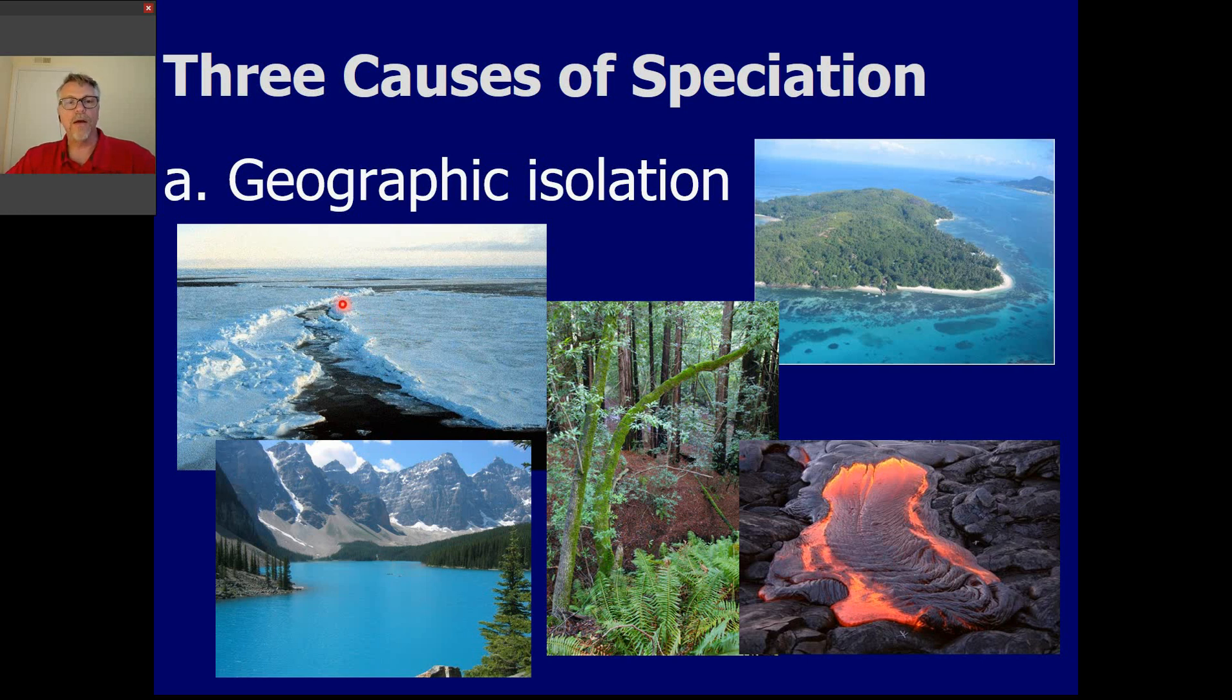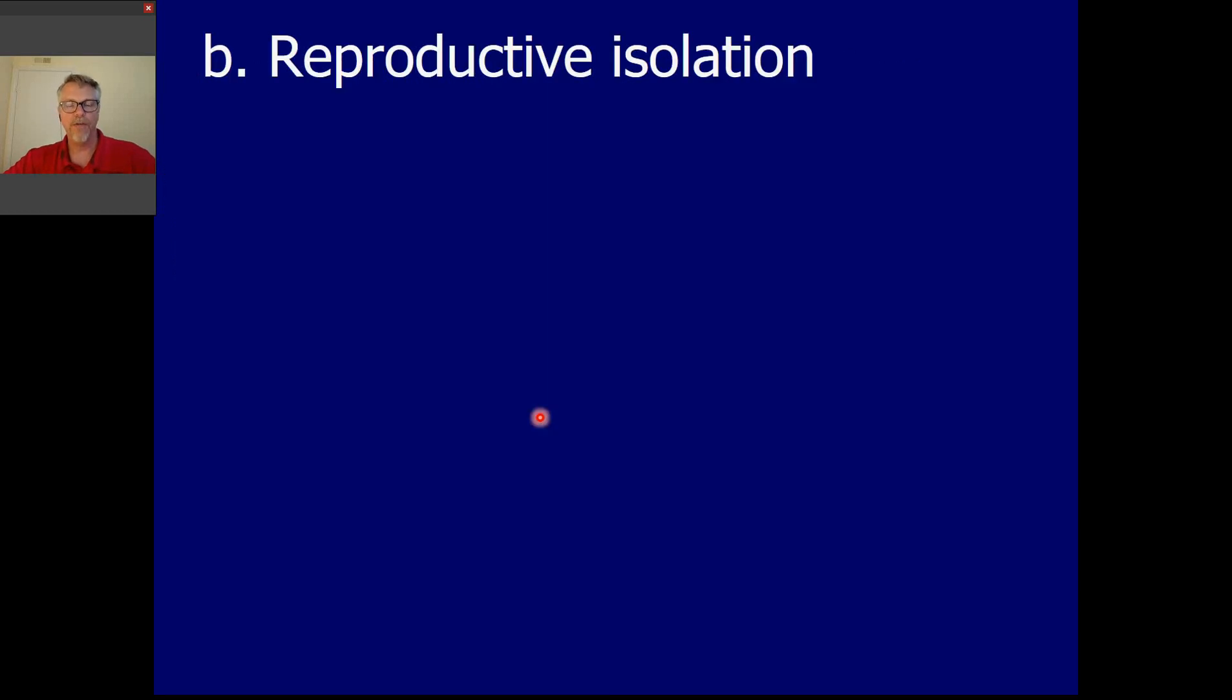Alright. So some kind of one, one of the causes of possible causes of speciation is some kind of change in the geography that separates a population into two parts. And once those two populations can no longer intermingle, that means they can't interbreed, and eventually they're going to, by genetic drift, they're going to evolve into different species. So one cause for speciation is geographic isolation.